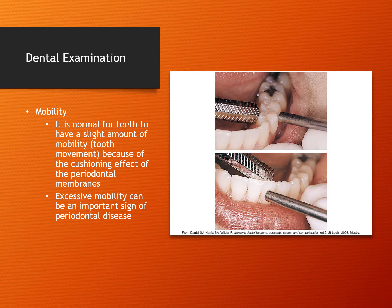Mobility is recorded using the following scale: zero equals normal, one equals slight mobility, two equals moderate mobility, three equals extreme mobility. This picture shows how the periodontist would check for mobility.